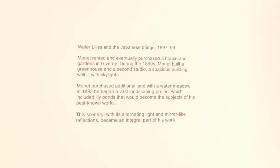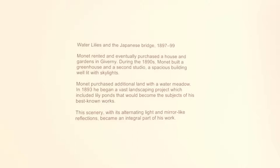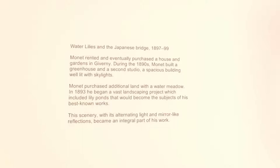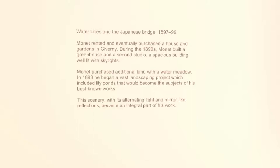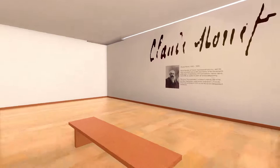Water Lilies and the Japanese Bridge: Monet rented and eventually purchased a house and gardens in Giverny. During the 1890s, he built a greenhouse and a second studio with spacious, well-lit skylights. He purchased additional land with a water meadow, and in 1893 began a vast landscaping project which included lily ponds that would become the subjects of his best-known works. This scenery, with its alternating light and mirror-like reflections, became an integral part of his work.